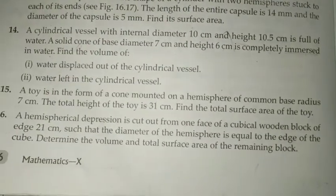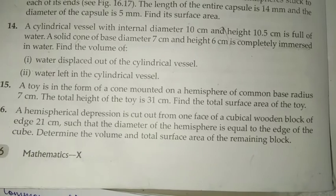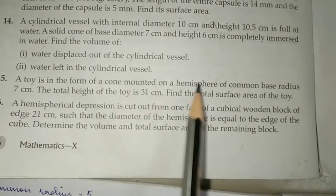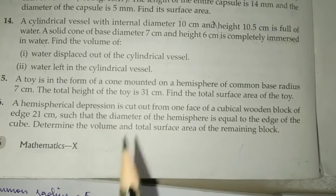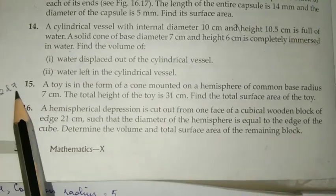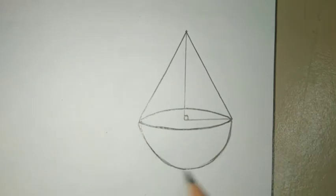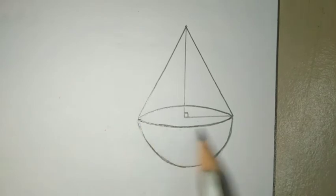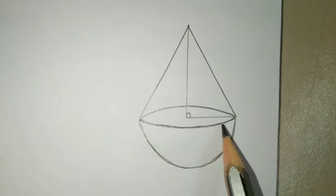Okay, moving on to question number 15, here it says, a toy is in the form of a cone mounted on a hemisphere of common base radius 7 cm and the total height of the toy is 31 cm and you have to find the total surface area of the toy, okay? Now, this question is similar to question number 2 and question number 7 of your textbook and the diagram is also the same.